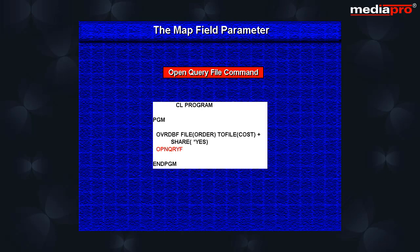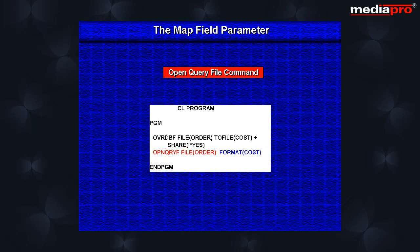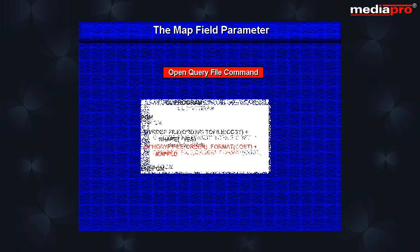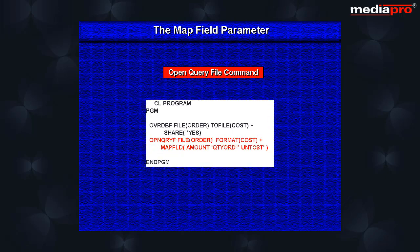Next we have the open query file command. In the file parameter, we specify the order file which contains the data. In the format parameter, we specify the cost file which defines the record format that we require. Next we have the map field parameter where we define the fields that are to be derived from the order file. We have the total cost field which is the product of the cost per unit field and the number of units ordered.